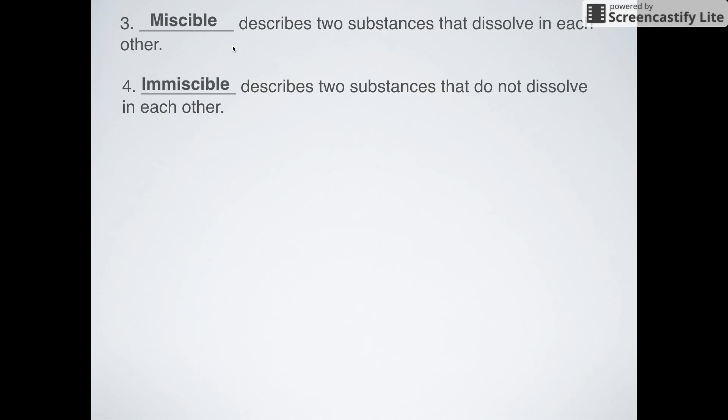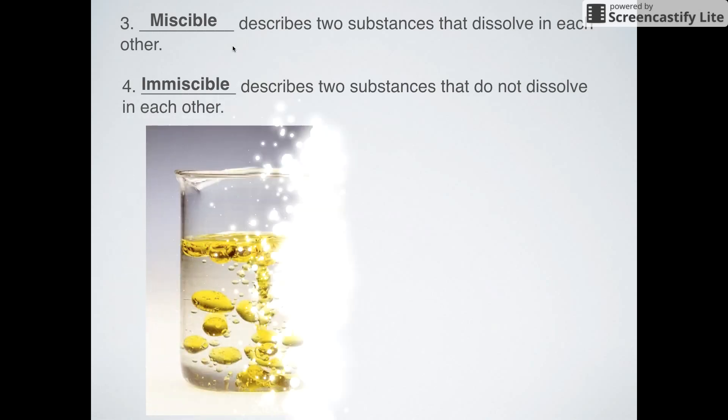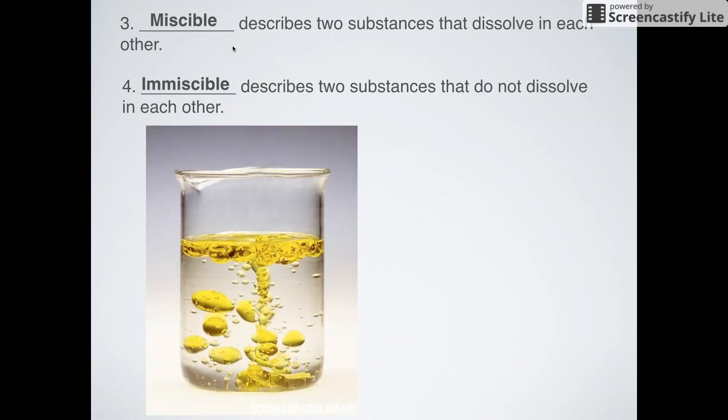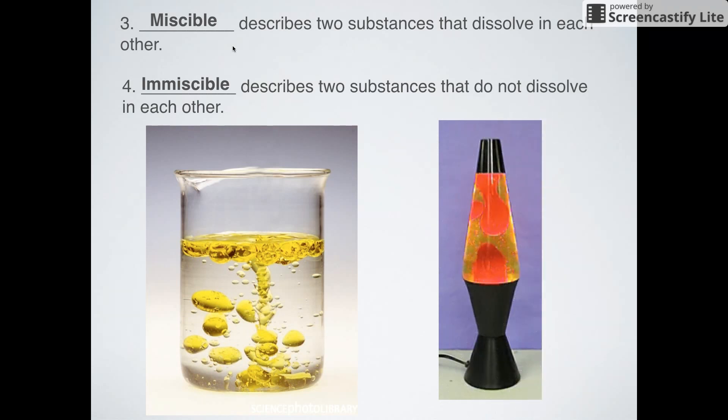Two terms: miscible and immiscible. Miscible means two things dissolve in each other. Immiscible means two substances do not dissolve in each other, like oil and water. Another example of an immiscible mixture is a lava lamp - the waxy stuff and liquidy stuff don't mix together. If they did, your lava lamp would be boring - just one mixture that wouldn't look very cool.